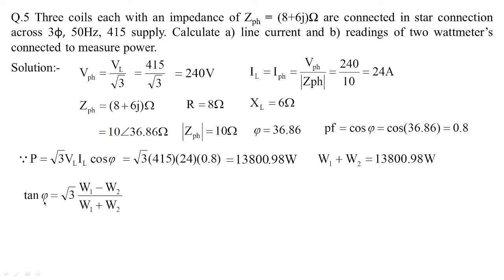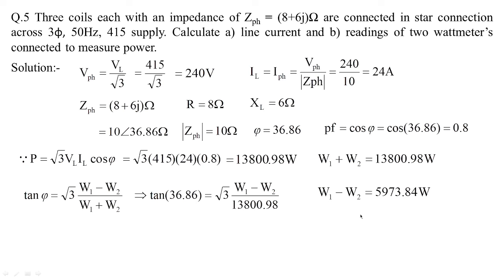Using tan φ = √3(W1 - W2)/(W1 + W2), substituting tan(36.86°) and W1 + W2 = 13800.98 W, we get W1 - W2 = 5973.84 watts. Solving these two simultaneous equations gives W1 = 9887.41 watts and W2 = 3913.57 watts. This is how we calculate all problems related to the two-wattmeter method for different load conditions.